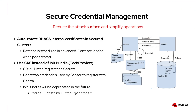ACS 4.7 introduces autorotation to automatically renew certificates used for MTLS communication within secured clusters. Previous releases used init bundles for both bootstrap credentials and MTLS certificates, posing security risks as they couldn't be revoked if compromised. With ACS 4.7, separate credentials are used for both bootstrapping and communications, allowing revocation of the bootstrap credentials and a clear separation of trust.